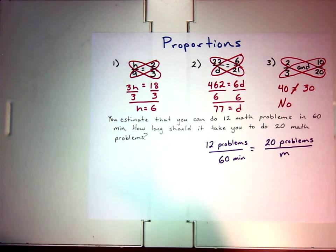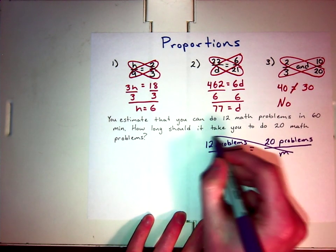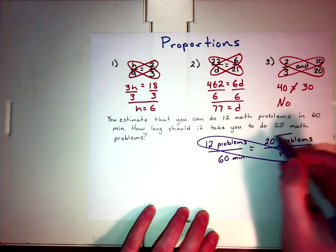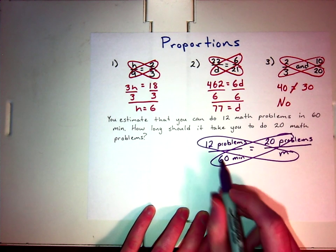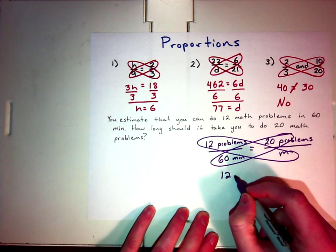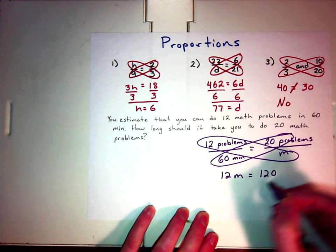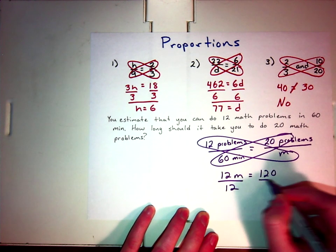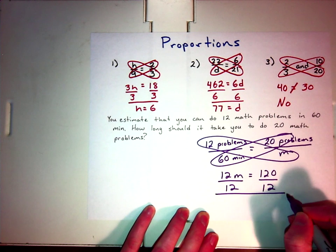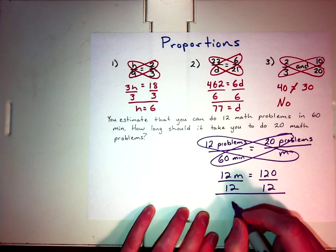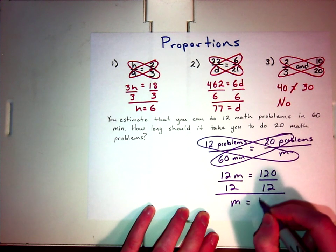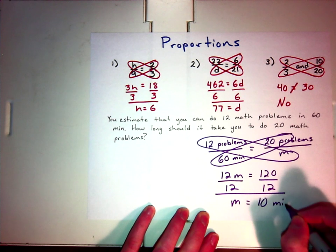So, and now all we have to do is use our cross multiplication, the butterfly method. So, I get 12m, 60 times 20 is 120, divide by 12. So, m equals 10, and it was in minutes.